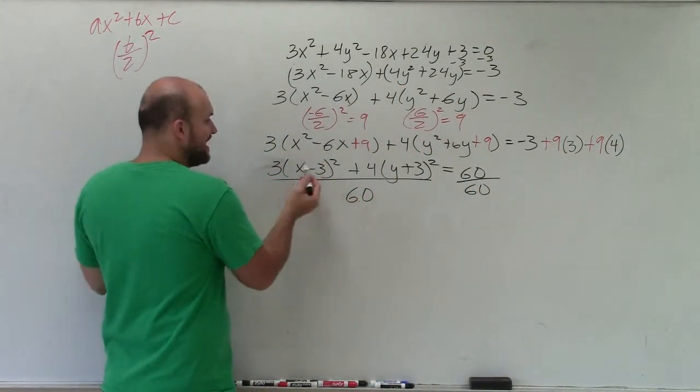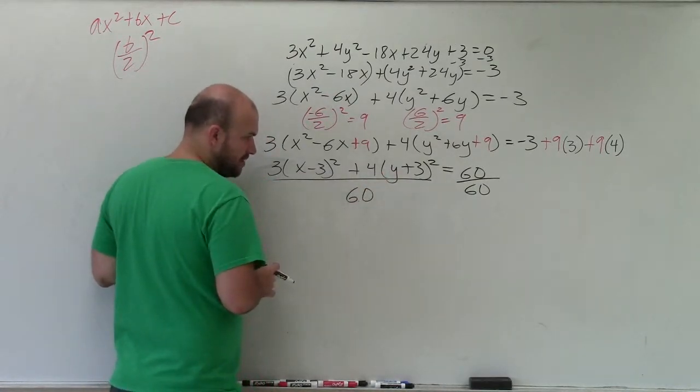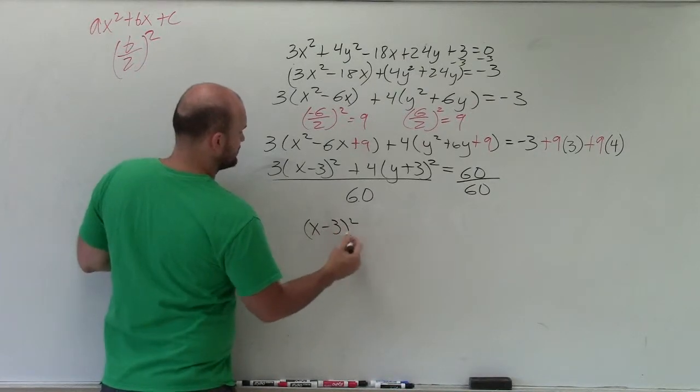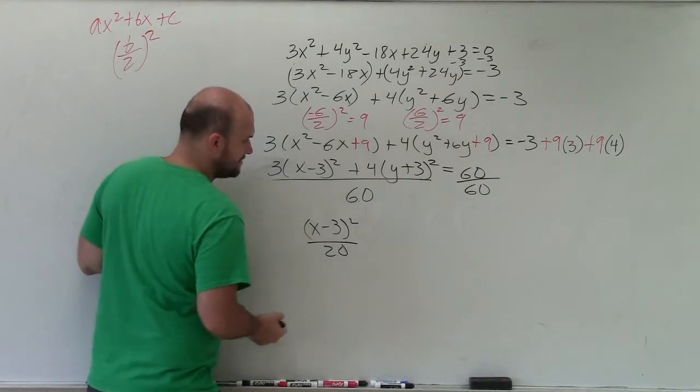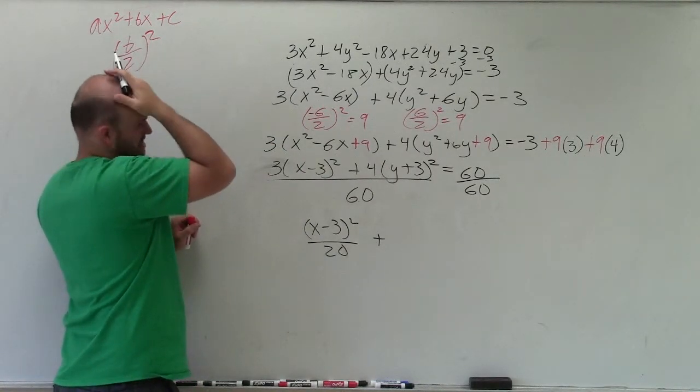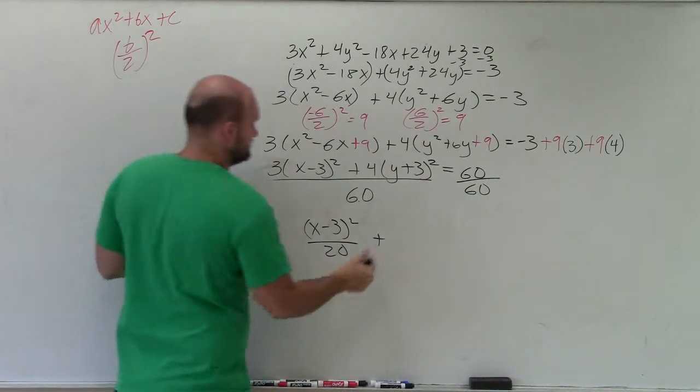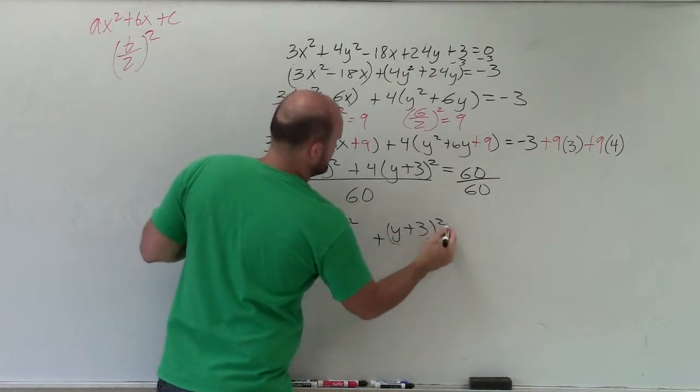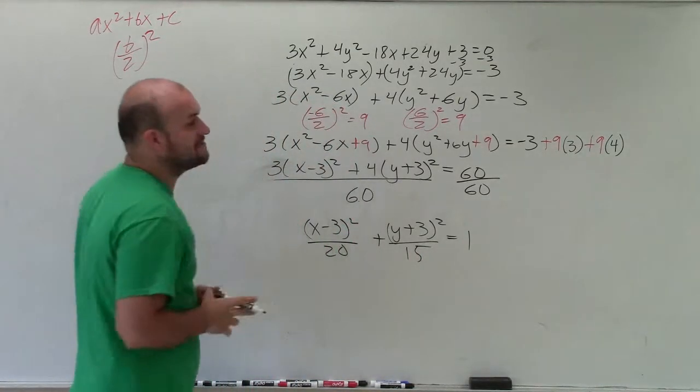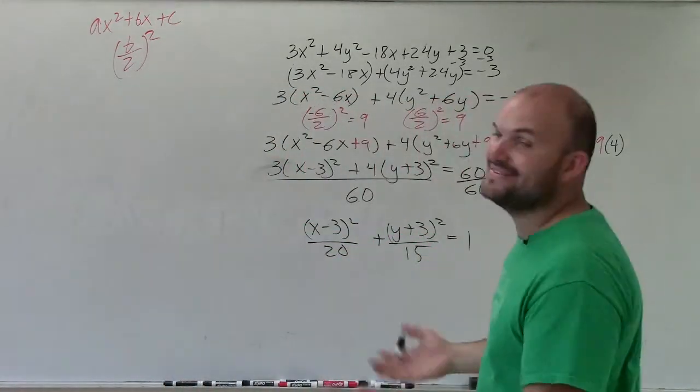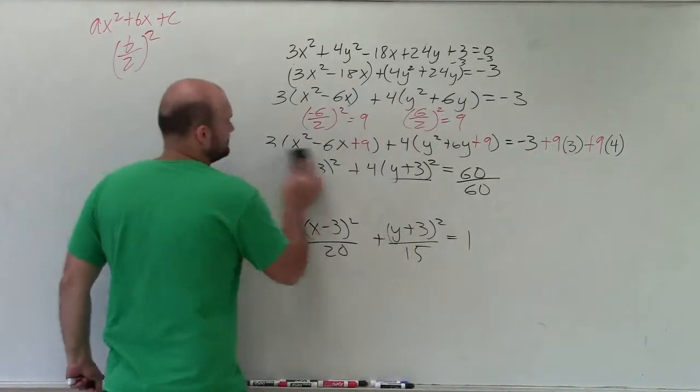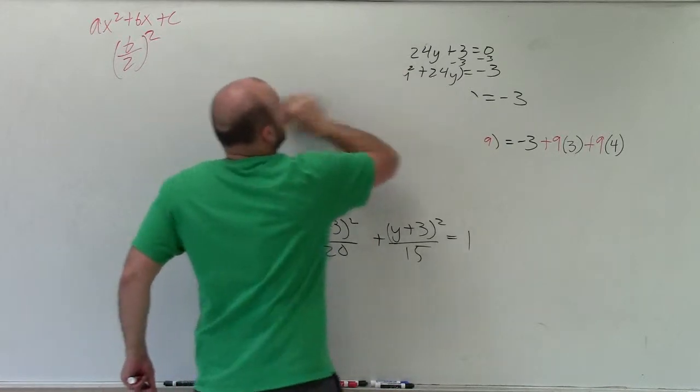Now remember, the 60 divides into both of these expressions. So therefore, 60 divided by this, I get x minus 3 squared over 20 plus here, I get 15. y plus 3 squared over 15 equals 1. So now we found the equation. We haven't even started graphing, though, yet. So I'm going to erase this and graph above. Isn't this fun? All right.